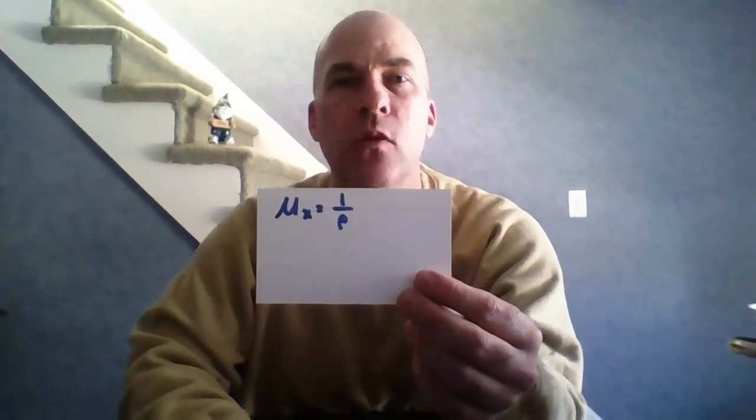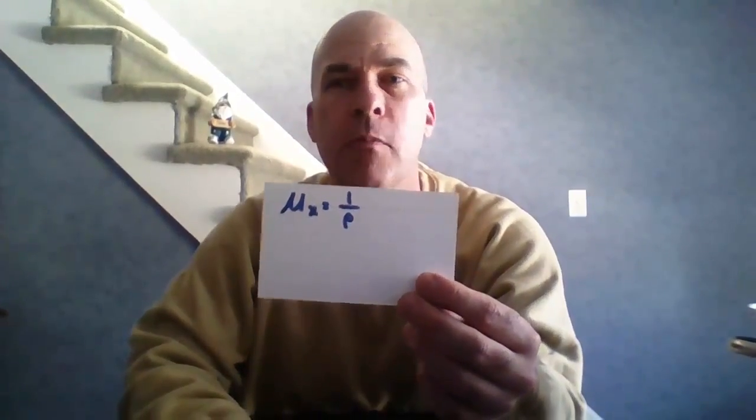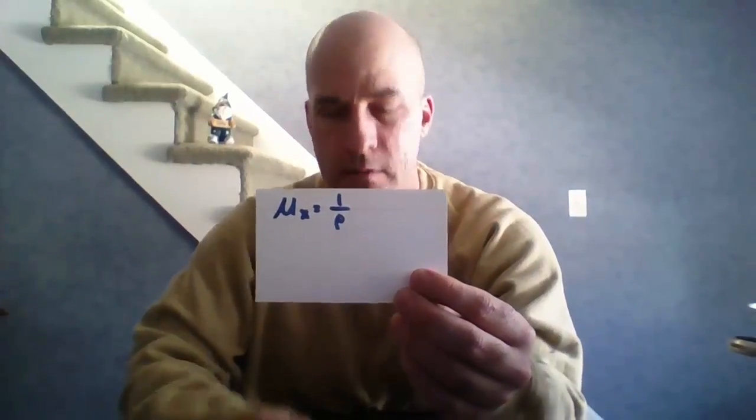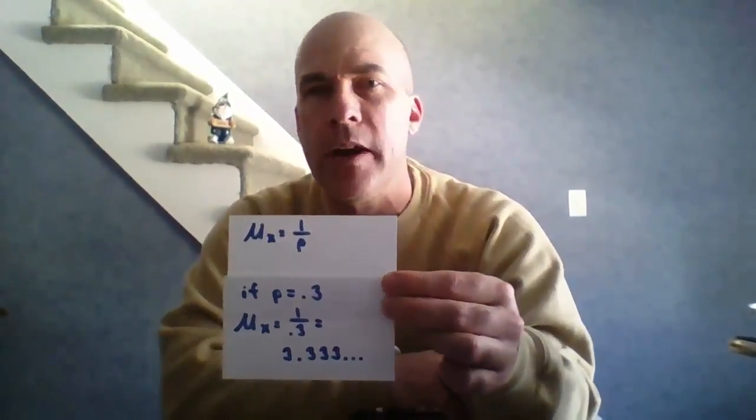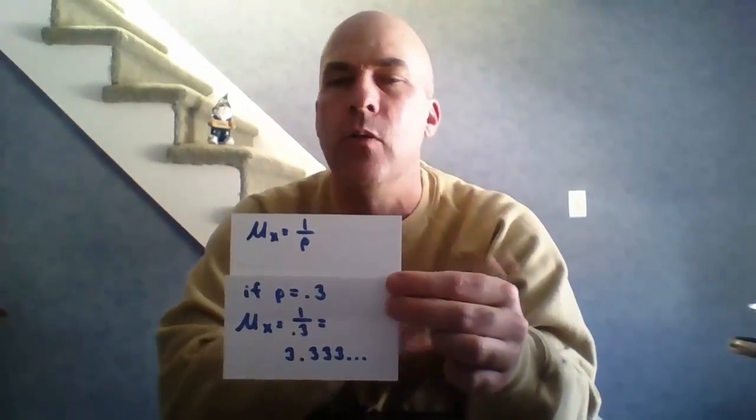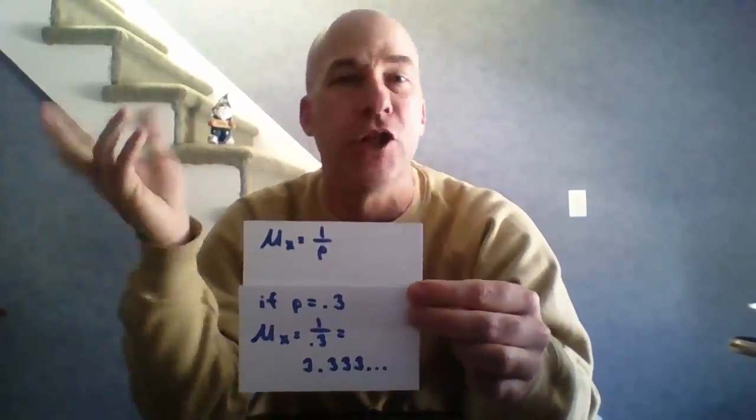Now for mean and standard deviation — we always want to know these for our distributions. The mean of a geometric distribution is simply 1 over p. So in our example, with p = 0.3, the mean is 1 ÷ 0.3 = 3.3 repeating. That's the mean formula — on average it takes about 3.3 trials to get a male fish.